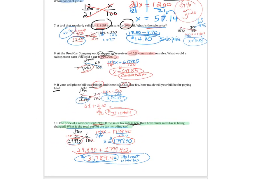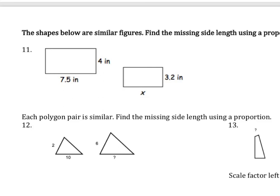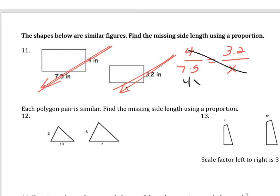Done with that page. Now we have similar figures — these are easy. Set up the proportion top to bottom: 4 over 7.5 equals 3.2 over x. That gives 4x equals 7.5 times 3.2, which is 24. Divide by 4: x equals 6 inches. Don't forget to label — 6 inches.